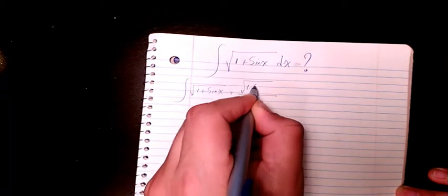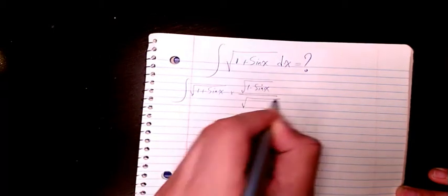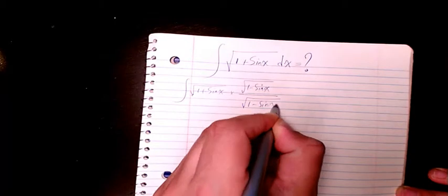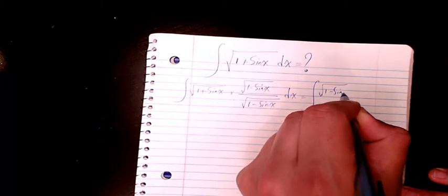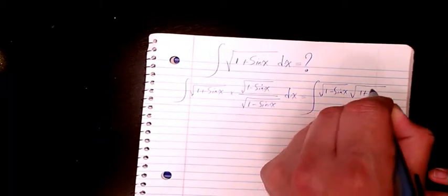So first of all, I multiply and divide this expression by the conjugate one minus sine x and square root of one minus sine x in numerator and denominator. That makes it square root of one minus sine x times square root of one plus sine x divided by square root of one minus sine x dx.